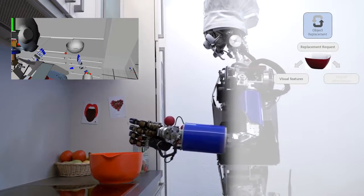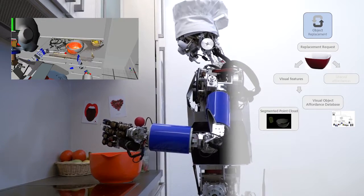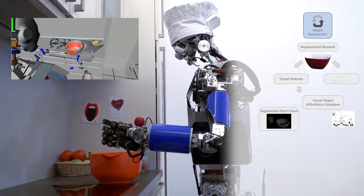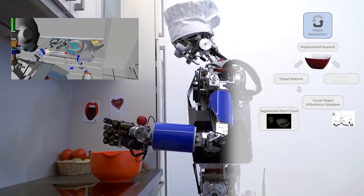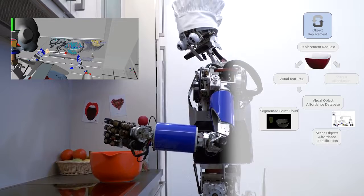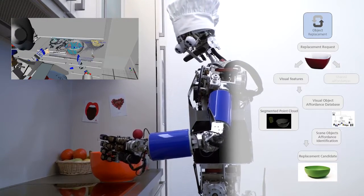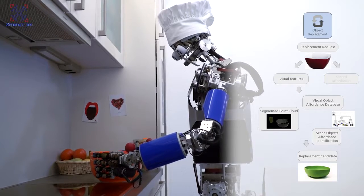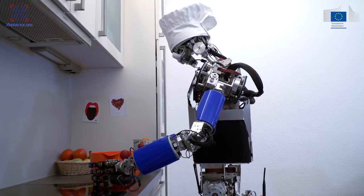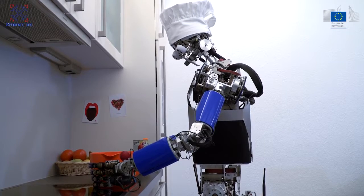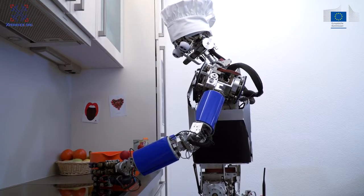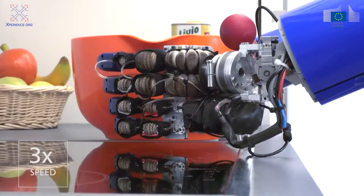These affordance labels are then compared with the affordance labels of the missing object to find a suitable replacement candidate. For example, one container can be replaced with another based on their shape that suggests pouring something into it.